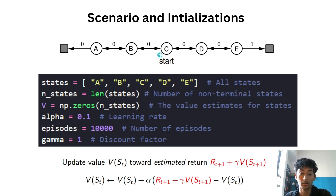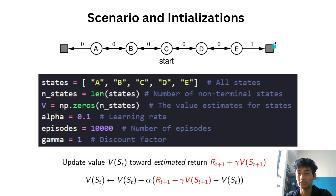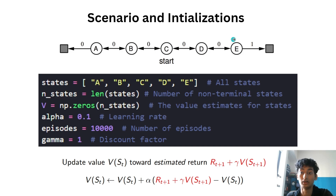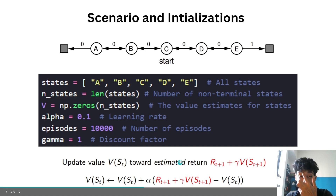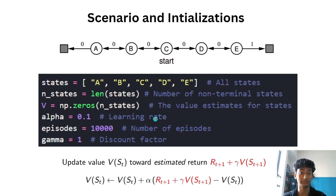The agent keeps hopping left and right according to actions and rewards until it reaches either the left or right terminal state, at which point the episode ends. We run this for 10,000 episodes so the agent has plenty of time to learn about the state space and find reward-maximizing actions. We also include gamma as our discount factor.